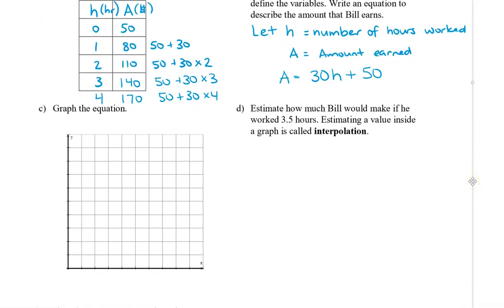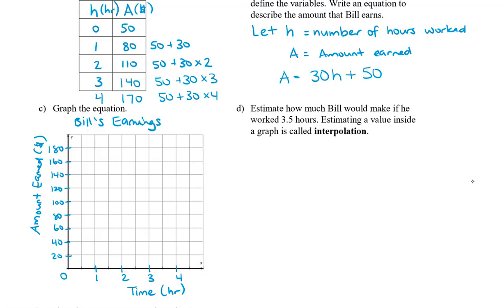Alright, let's plot these points onto our graph. So we have a zero here, and our time is on the bottom, and that's going to be in hours. And because we only go up to four, I'm going to skip count every two squares to be one hour. And then we need to go all the way up to 170, so I'm going to actually skip count vertically by 20. Okay, we're going to label this as amount earned, and that's in dollars. And we'll give this a title, which is Bill's Earnings by hour.